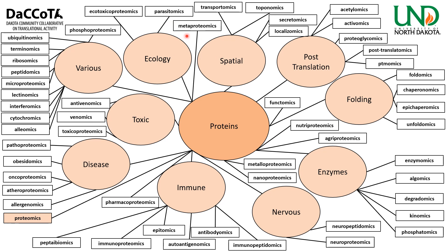Phosphoproteomics covers protein kinase phosphate groups as post-translational modifications. Under ecology: ecotoxicproteomics (ecology, toxicology, and proteomics) and parasitomics (secretions of parasites that mediate parasitization, a subset of secretomics). Metaproteomics covers proteins from the environment — paralleling metagenomics and metatranscriptomics. Under spatial topics: transportomics (gene products that are transported), toponomics (topological proteomics), secretomics (secreted proteins of cells, tissues, or organisms), and localizomics (presence or absence of proteins in particular cellular compartments).